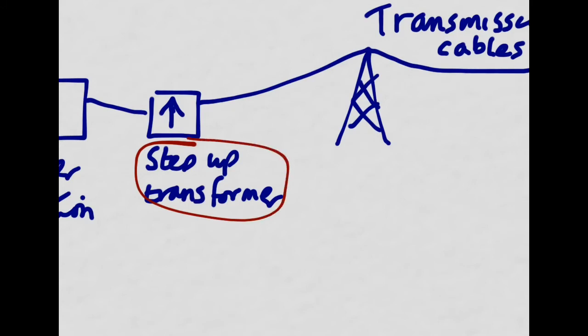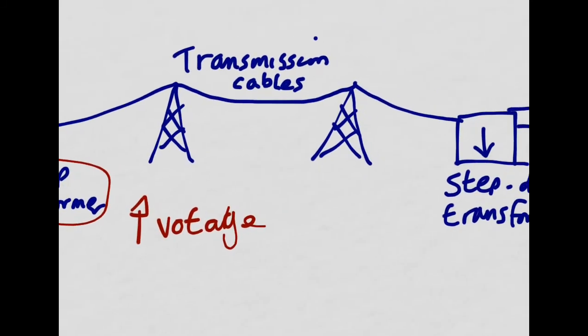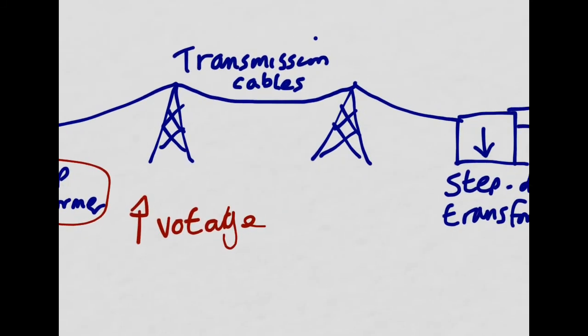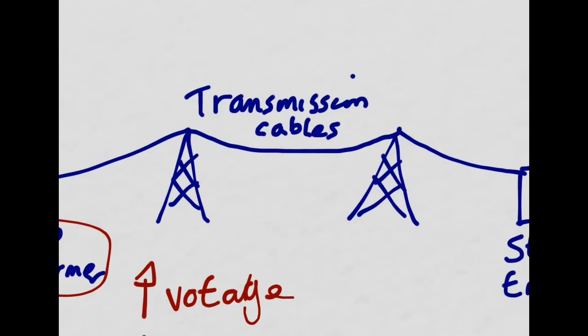From the power station, we go to our step-up transformer. Remember, step-up transformer will increase the potential difference. Increase the potential difference or increase the voltage. That's going to reduce the current. Why do we need to reduce the current then? Well, when we get to these transmission lines, if you've got, let's say, like a high current flowing through anything,